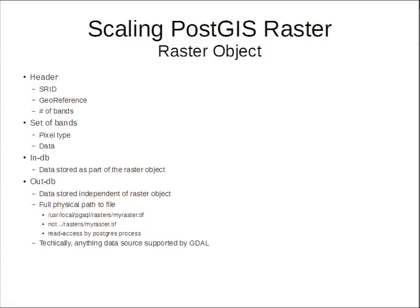A couple of key rules: the Postgres server needs to know where the file is — it can't be a relative path, it needs to be the absolute physical path. The Postgres process also needs to be able to read it, so if your security is wrong, it's not going to work. But because PostGIS Raster is built on GDAL, anything GDAL supports, PostGIS will ingest — you can give it a URL, a WMS service, and it'll handle it.